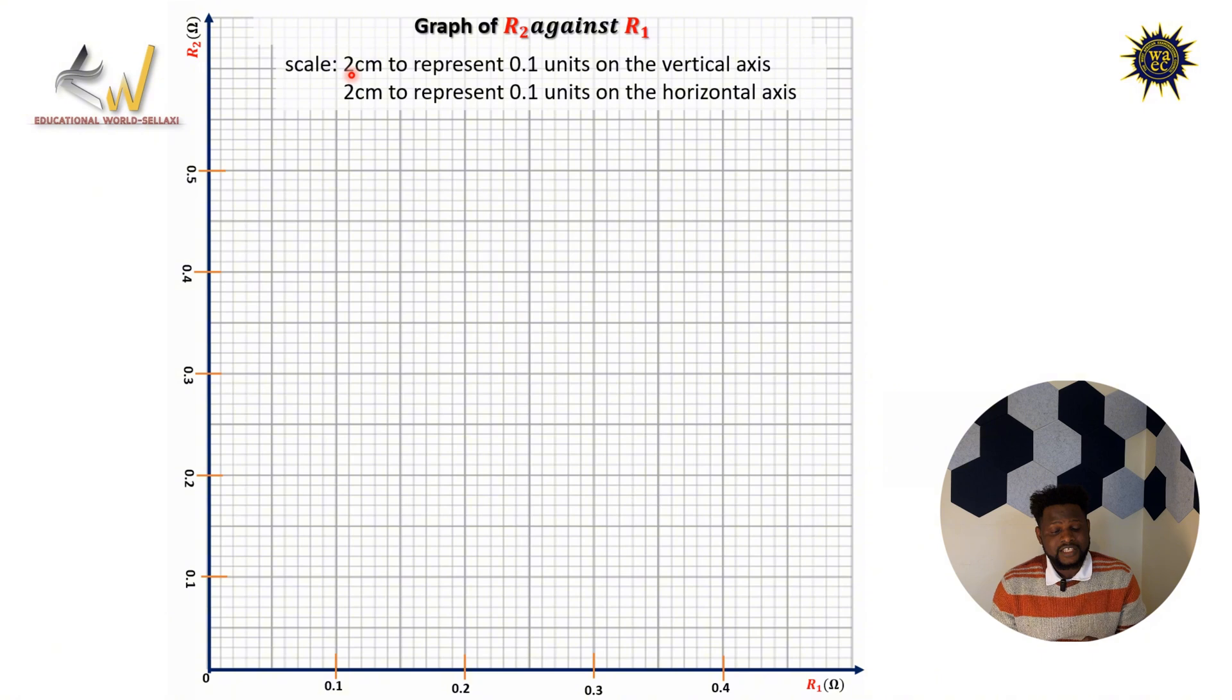Now the next thing you have to do is the scale of the graph. So in this case, this graph here, we have the scale is 2cm to represent 0.1 units on the vertical axis, and as well as 2cm to represent 0.1 units on the horizontal axis. So I'm going to explain this for you to see.